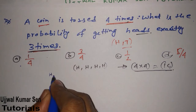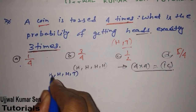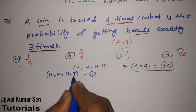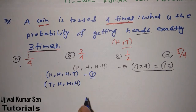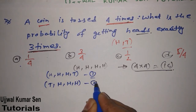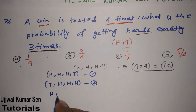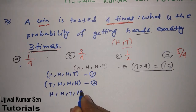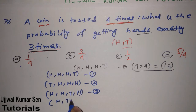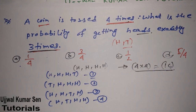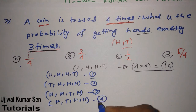We can get exactly three heads as follows: Head-Head-Head-Tail, Tail-Head-Head-Head, Head-Head-Tail-Head, and Head-Tail-Head-Head. Those are four possible outcomes with exactly three heads.